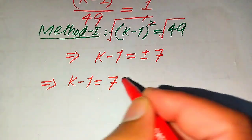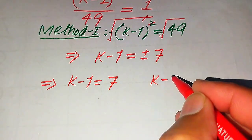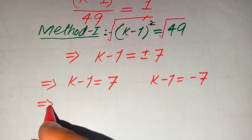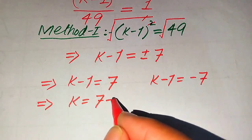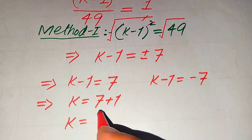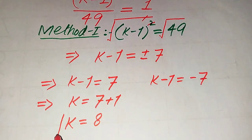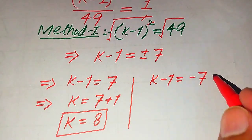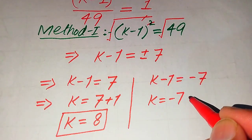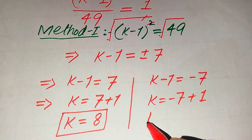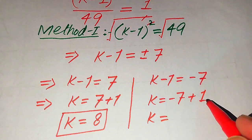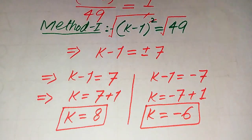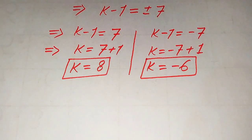We break this into two cases. The first case: k minus 1 equals plus 7, so moving minus 1 to the right gives k equals 7 plus 1, which is 8. The second case: k minus 1 equals minus 7, so k equals minus 7 plus 1, which is minus 6. So from Method 1 we get two values of k: 8 and minus 6.